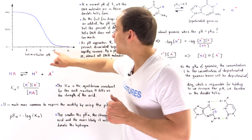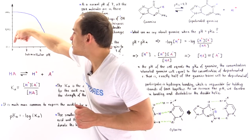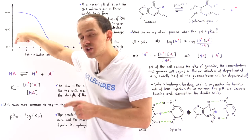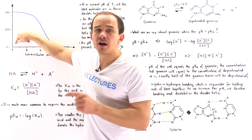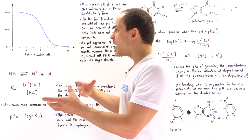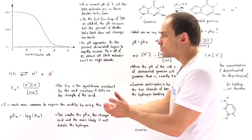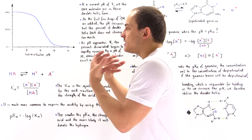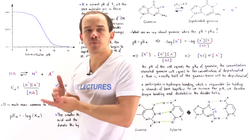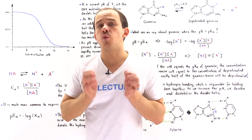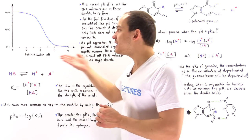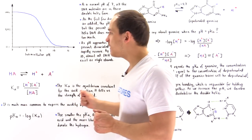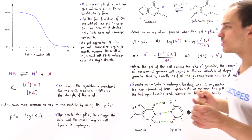By the time we get to a pH of 10, less than 10% of those DNA molecules inside the nucleus actually exist in their double helix form. So by increasing the pH — or decreasing the pH, which is not shown in this diagram — our DNA molecules begin to break down into their single strand form. The question is why? How does the pH actually affect the structure of the DNA molecule?